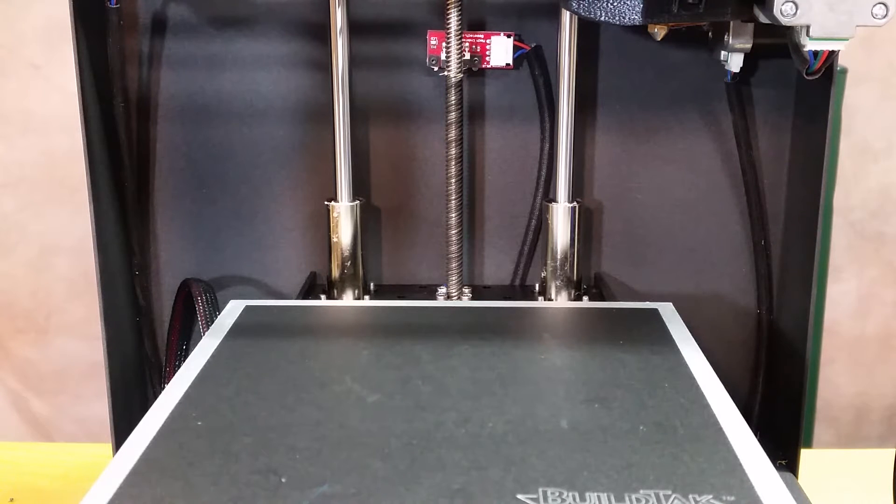For instance, today I'm going to print out the hairy troll. Now the thing about the hairy troll is if I let Cura create the support material, it's wanting to put supports under everything, including where the hair is going to bridge across to the sacrificial cone.